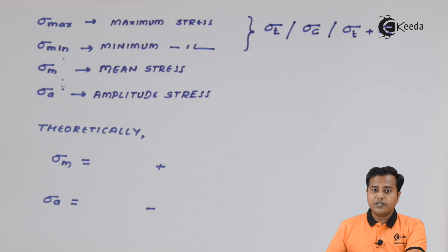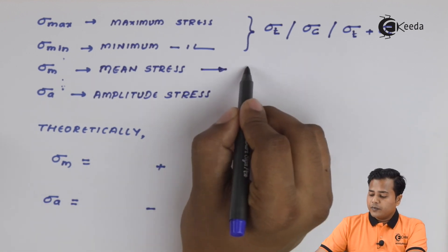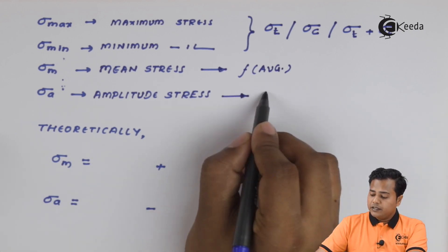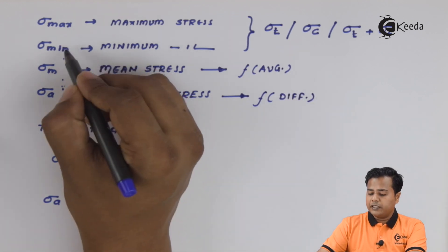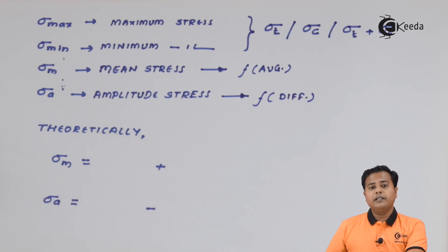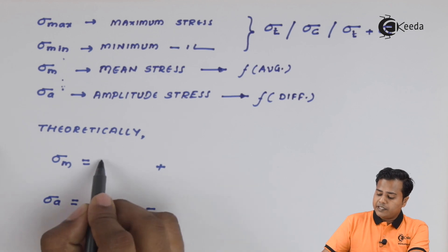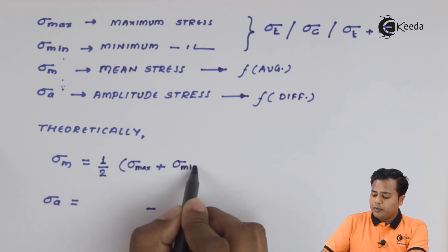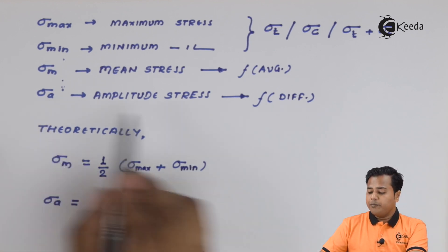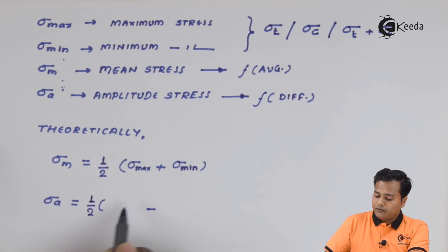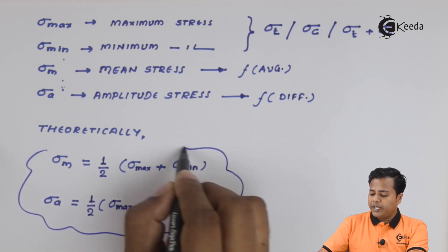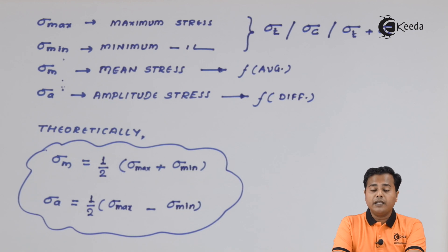Mean stress and amplitude stress are defined as follows: mean stress is a function of the average of maximum and minimum, and amplitude stress is a function of the difference of maximum and minimum. Theoretically, sigma mean equals half of (sigma maximum plus sigma minimum), and sigma amplitude equals half of (sigma maximum minus sigma minimum). These are the two main equations we need to understand and will apply repeatedly in further calculations.